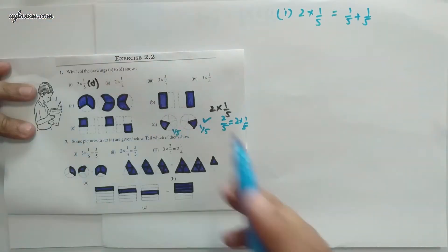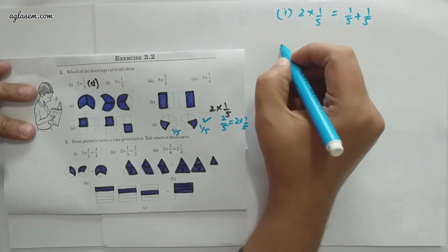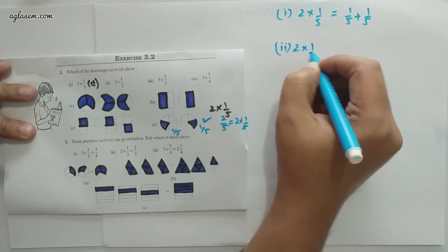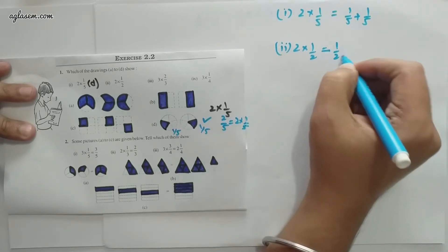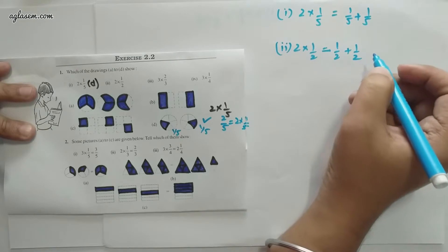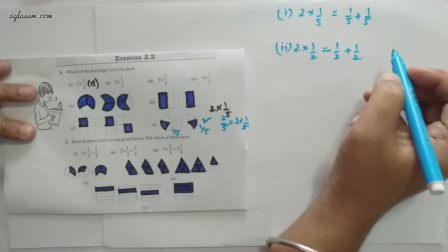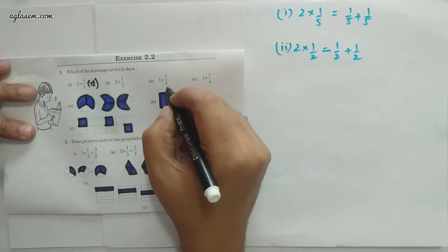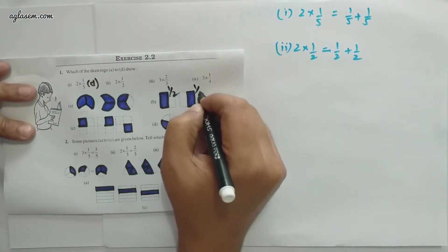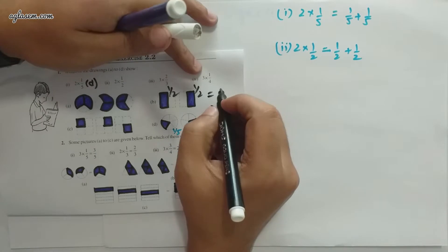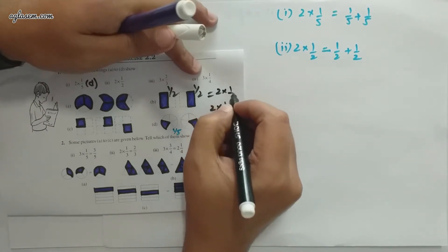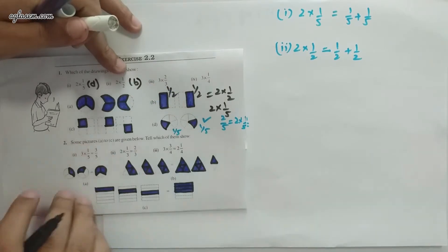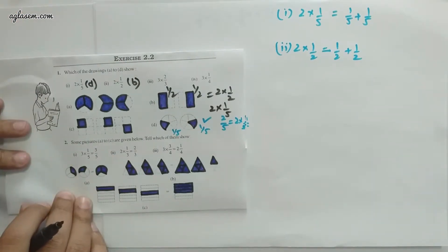Now for 2×(1/2): that means 1/2 + 1/2. Can you see half of the parts being highlighted? Yes — that is 1/2 + 1/2. So the answer to the second one is figure b.